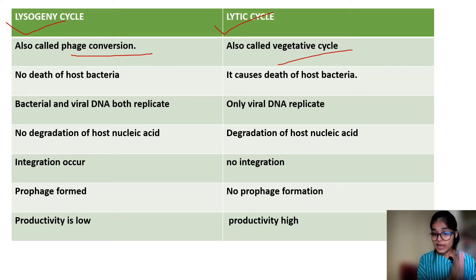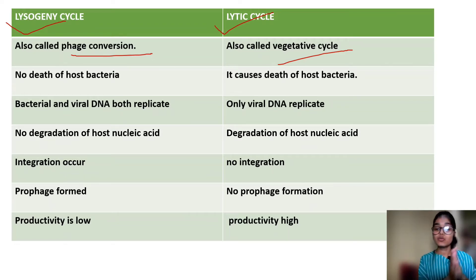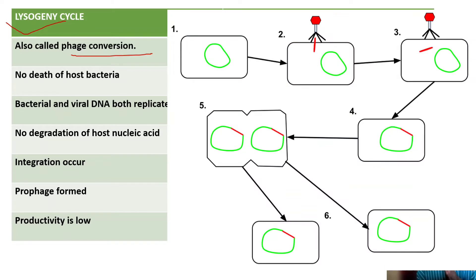What happens in the lysogeny cycle? The viral DNA is integrated into the host bacterial DNA. It does not cause the replication that leads to bacteria's death. That's why there is no death of the host bacteria.